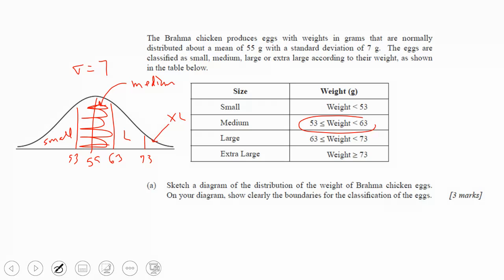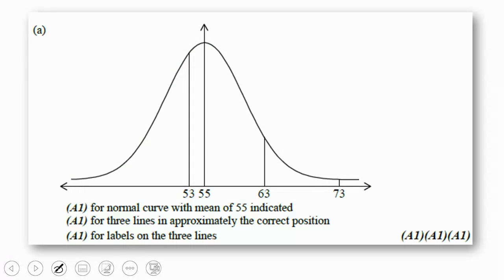So when it says sketch a diagram, show clearly the boundaries as long as you label it some way on the x-axis. Remember that we use negative infinity here, not 0, and positive infinity here. So there's your one point for the curve. You have the mean on it. One point for three lines in the correct position. One point for the labels on the three lines.